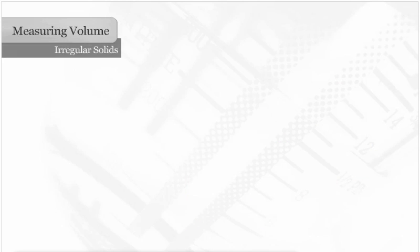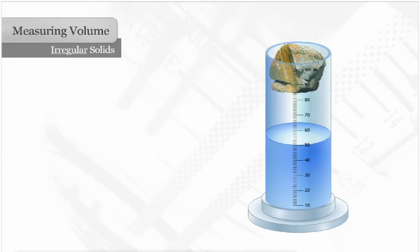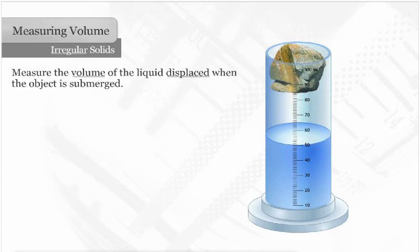To measure the volume of an irregularly shaped object, such as a rock, measure the volume of the liquid displaced when the object is submerged.